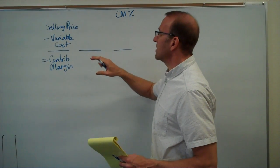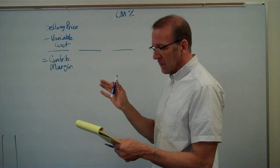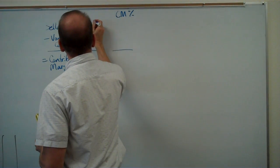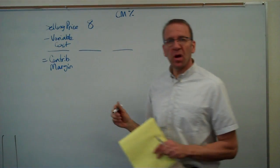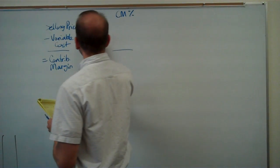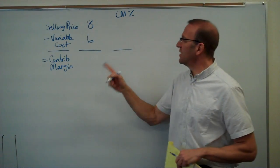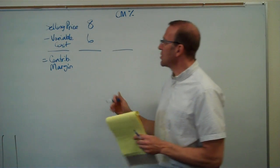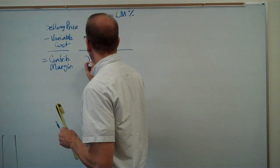Let's look at a per-unit basis. Let's say our product sells for $8. Our variable costs — which include materials, labor, and variable overhead — are $6 per unit. So our contribution margin would be $2.